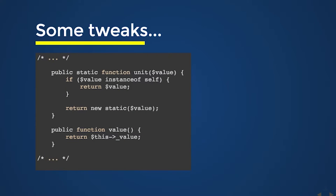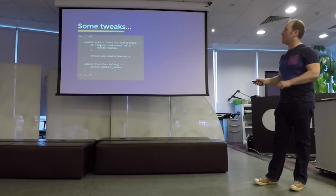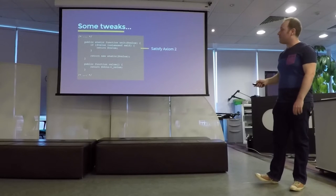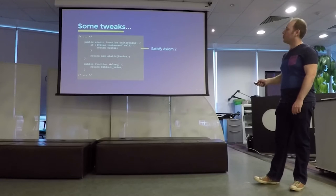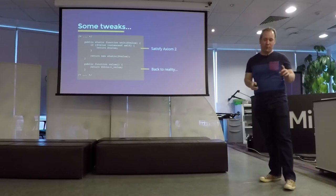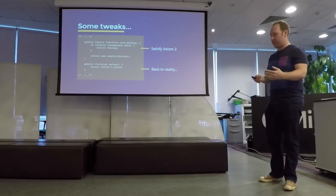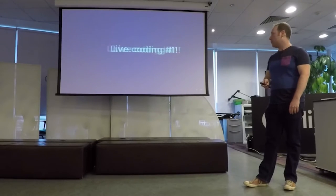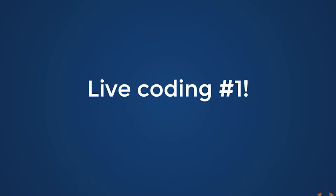We can just make a couple of little tweaks. First, we tweak the unit function: if the value passed in is already a Monad, we just return it back — that satisfies the second axiom. And finally, we write a little helper getter function for the value we wrapped internally. That's nice for when you have to leave this functional paradise and deal with imperative coding again — you can get the value back at the end of the transformations you're doing. Now I'm going to approach the lectern and do some live coding to show this in action.